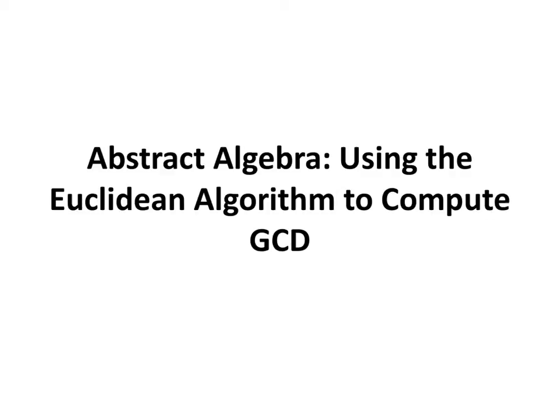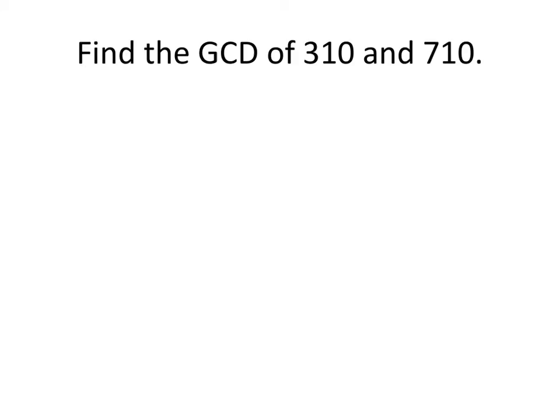In this video, we'll go through an example of using the Euclidean algorithm to compute the greatest common divisor of two integers. So in this example, we're looking for the greatest common divisor of 310 and 710.